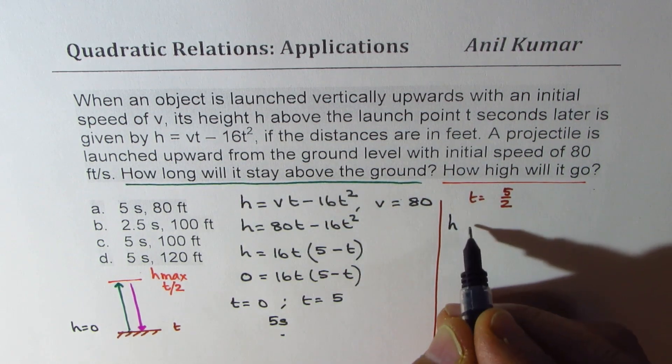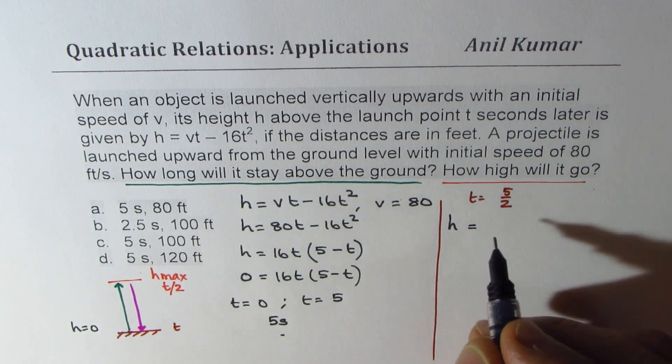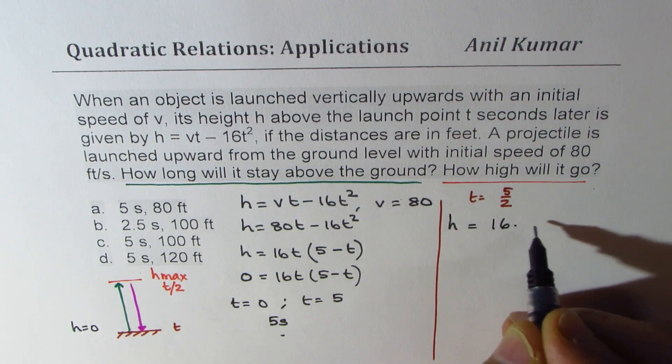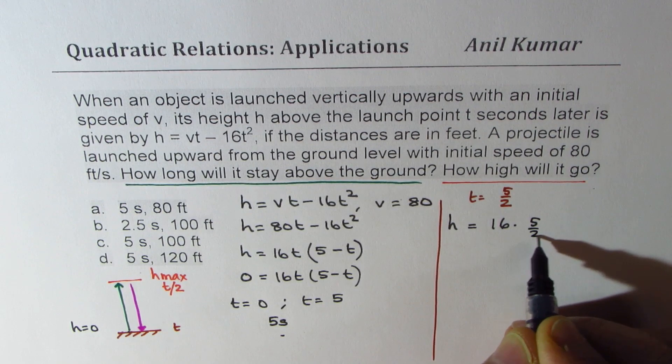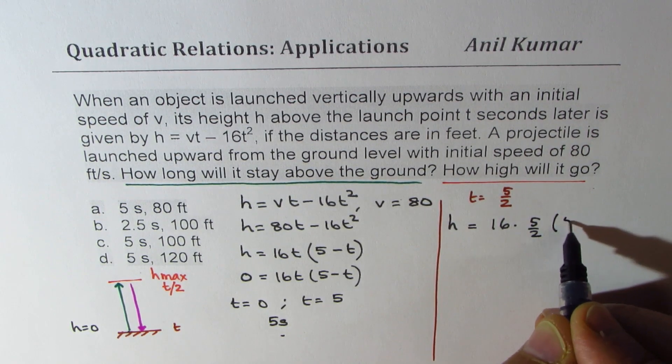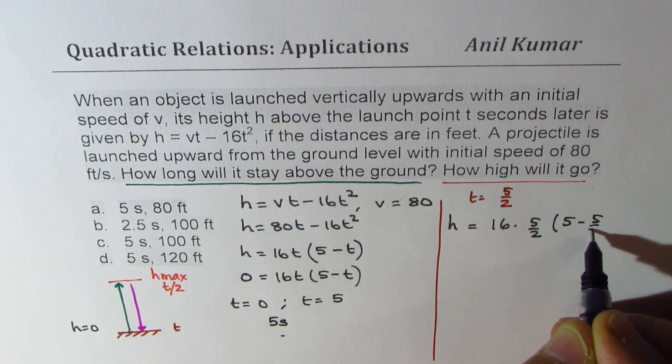So we substitute in one of our equations. The factored form is a good equation. 16 times 5/2 times (5 - 5/2).